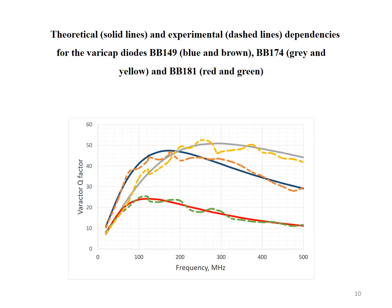Slide 10 presents the obtained during the study experimental and theoretical dependencies for the varicap diodes. As can be seen, these experimental dependencies represent theoretical ones quite accurately with a relative error no more than 8.6%.